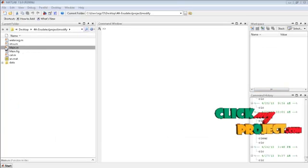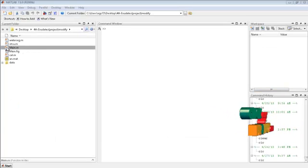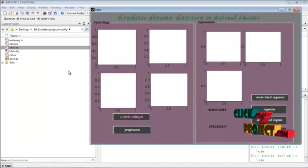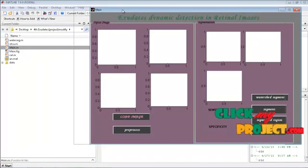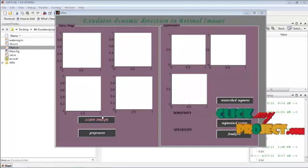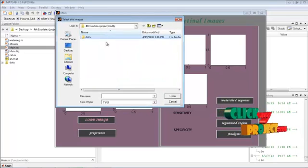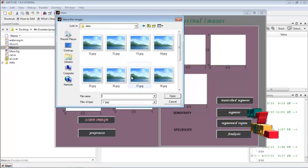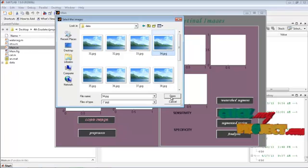Now, let's see about the execution part. I am having main.m file. Then select the file, right-click, run file. Then exudate dynamic detection in retinal fundus images. Then select the load image button. Here we have to select the input image.